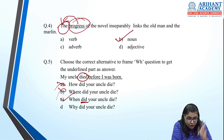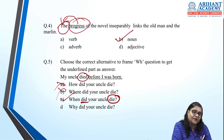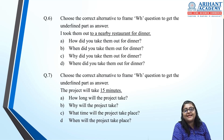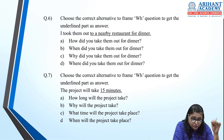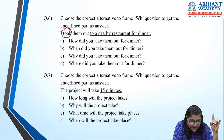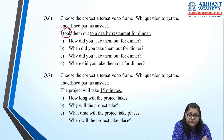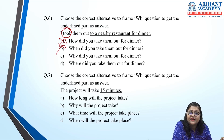Next: 'I took them out to a nearby restaurant for dinner.' The underlined part 'to a nearby restaurant' talks about a place. So the correct WH word is 'where.' Answer: 'Where did you take them out for dinner?'